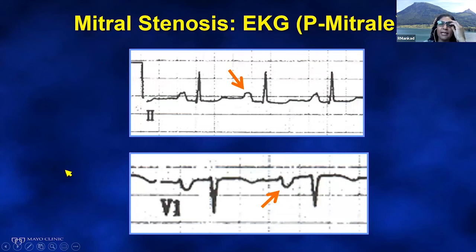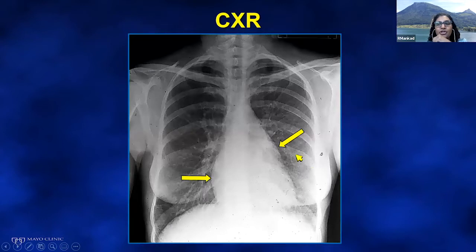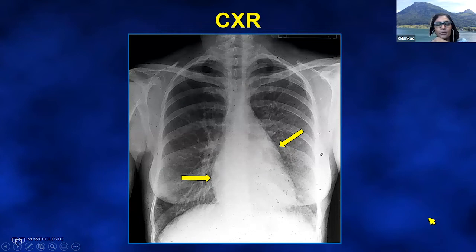On EKG, you get evidence of left atrial enlargement with a negative deflection of the P wave in V1 — P mitralae. These findings on EKG guide you to the fact that this person might have mitral stenosis causing a large left atrium. We can see that on chest x-ray as well: the enlarged left atrium along the left heart border, and evidence of right heart enlargement if there's concomitant pulmonary hypertension.